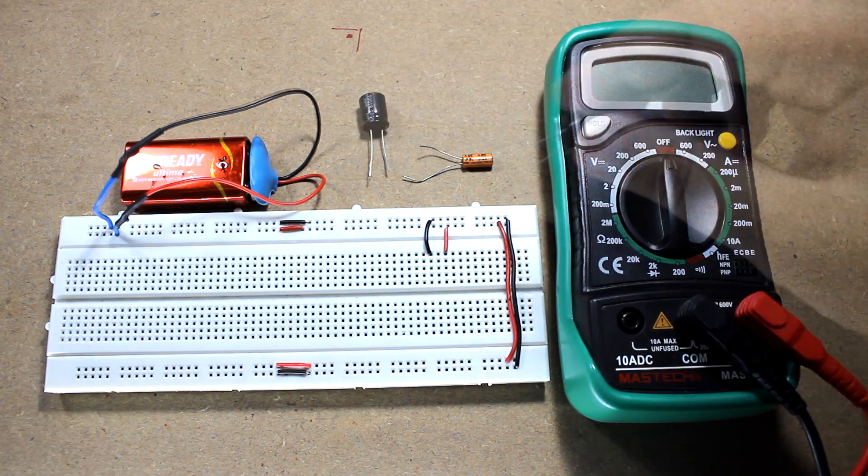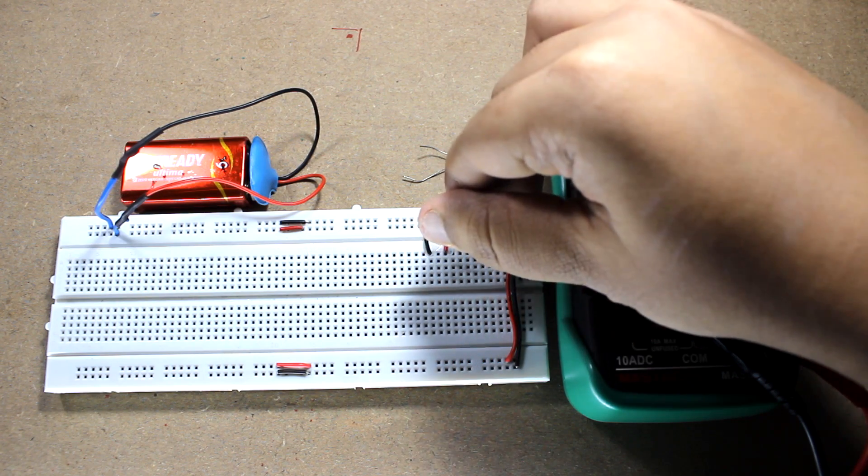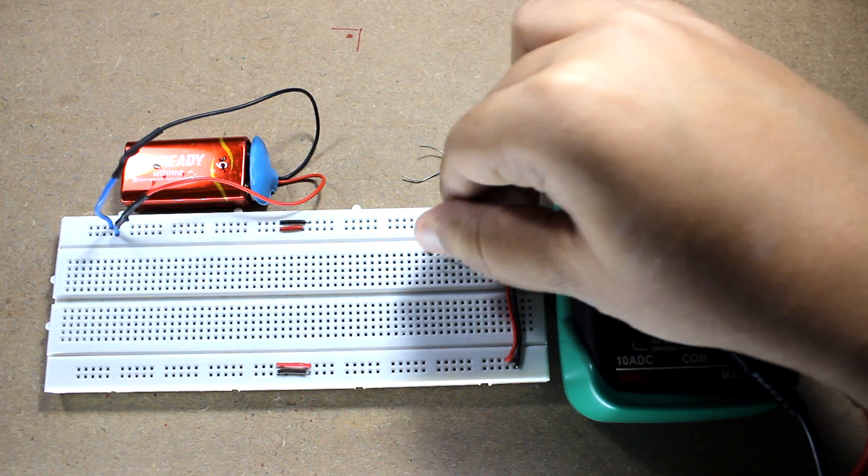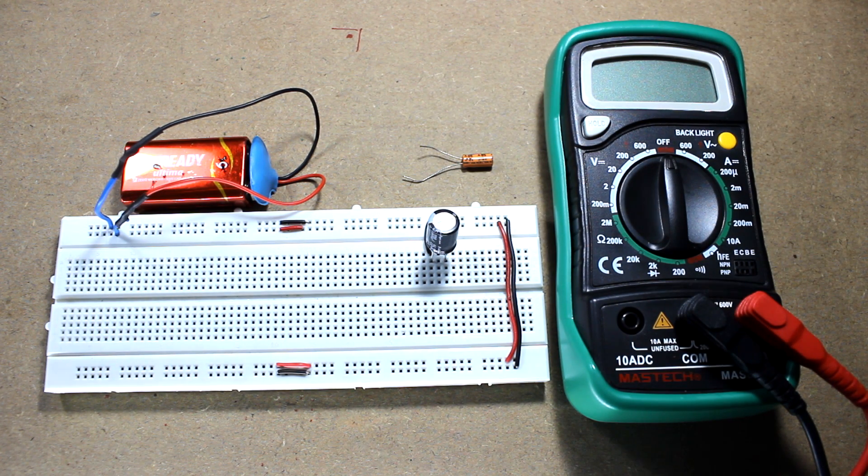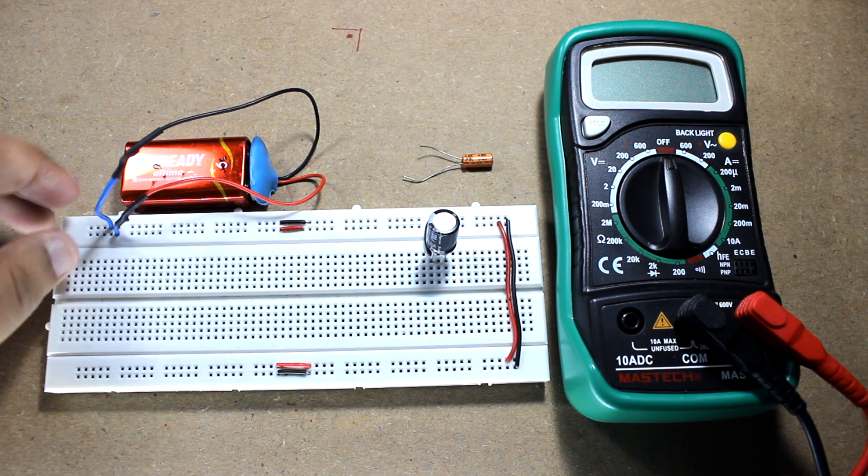And the negative leg of the capacitor should be connected to the negative leg of the battery. So the capacitor is connected now. Now let's wait for some 10 to 15 seconds to charge up the capacitor. As this capacitor is of a higher capacitance, it will take some more time than the smaller ones to get charged.